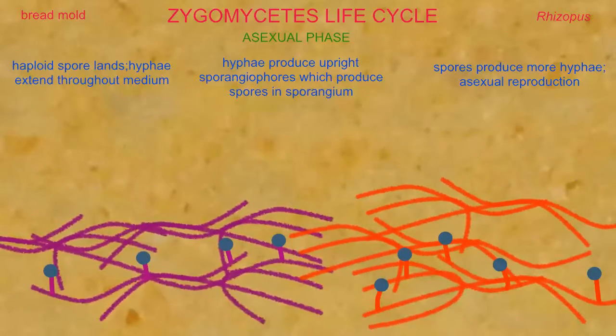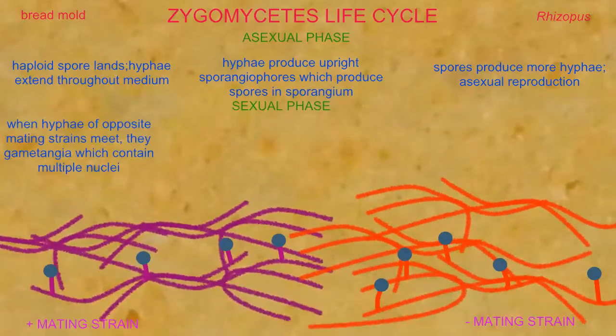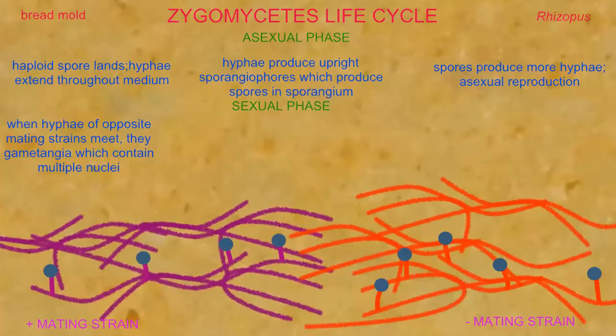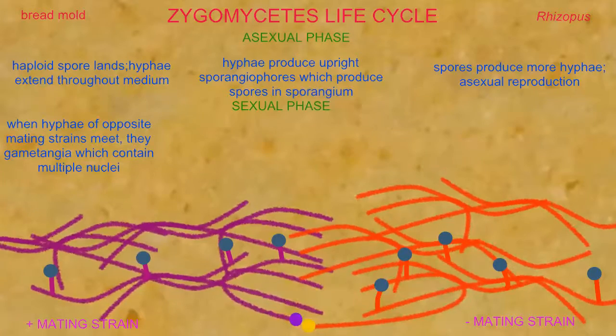When hyphae of opposite mating strains encounter each other, they extend and produce gametangia, which contain multiple haploid nuclei.